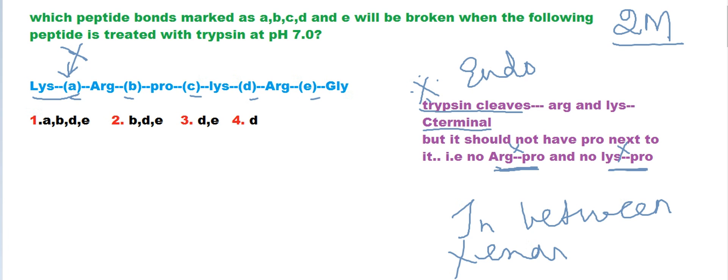Next, you might assume it will cleave over here — but no, that is also wrong, because arginine is followed by proline. Whenever arginine or lysine is followed by proline, that peptide bond cannot be cleaved by trypsin.